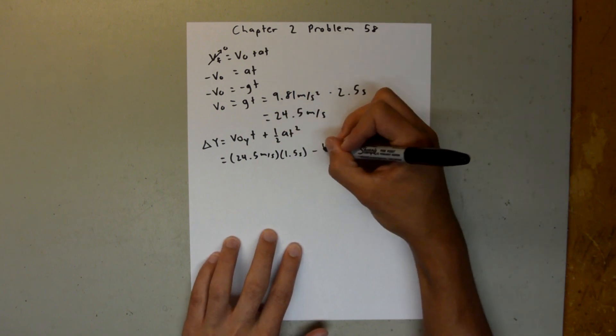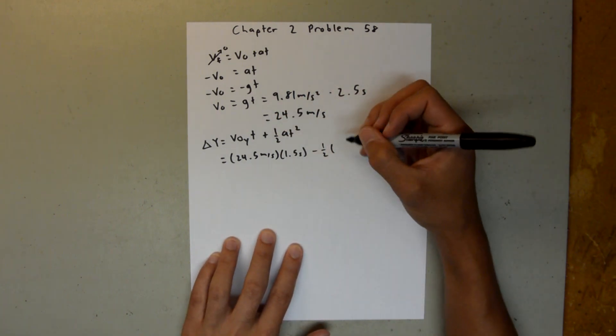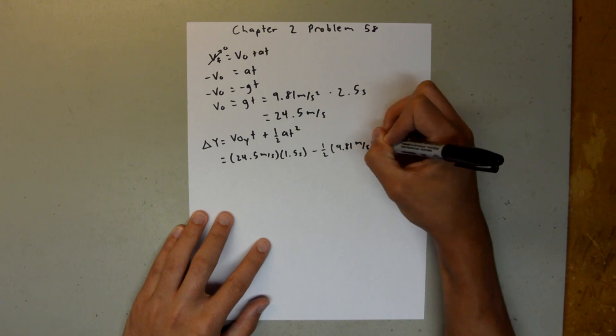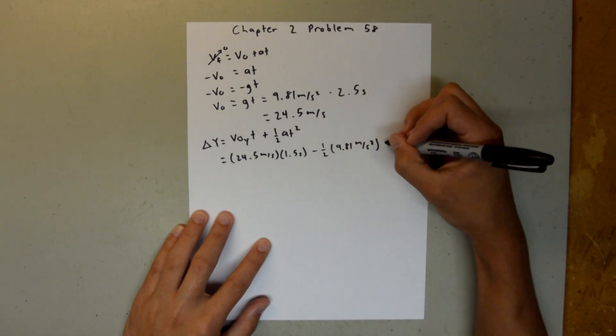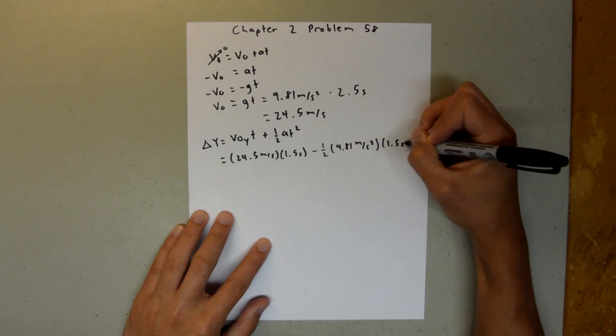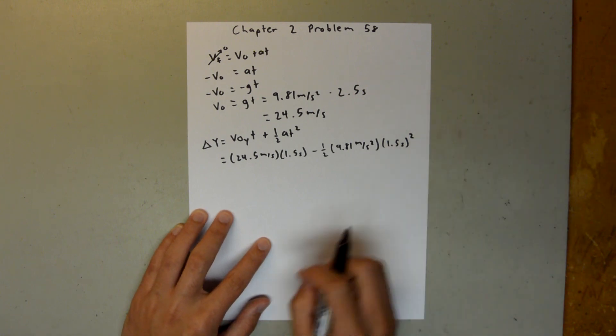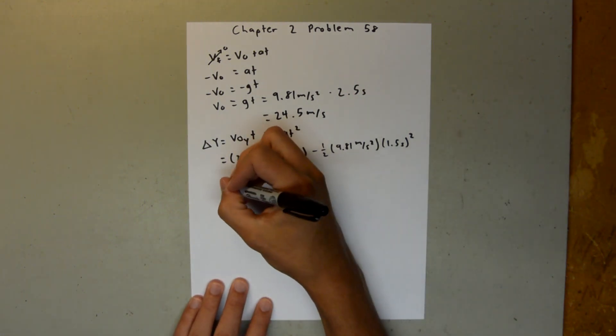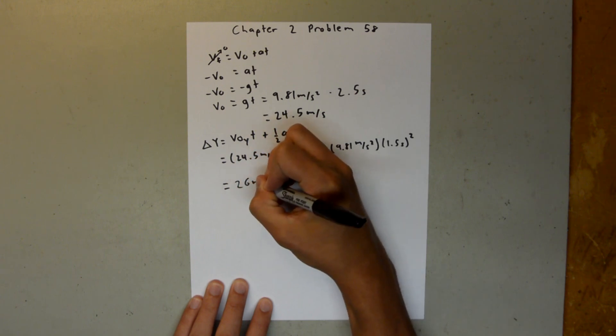Minus one-half, again we have 9.81 meters per second squared times 1.5 seconds squared. When you plug all that into your calculator, you should get about 26 meters.